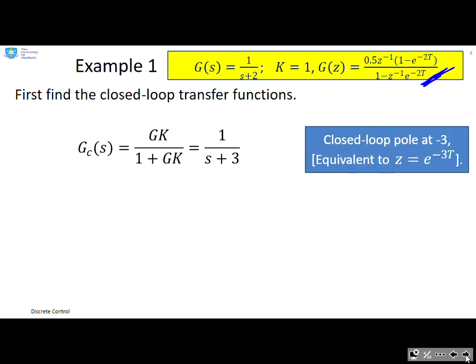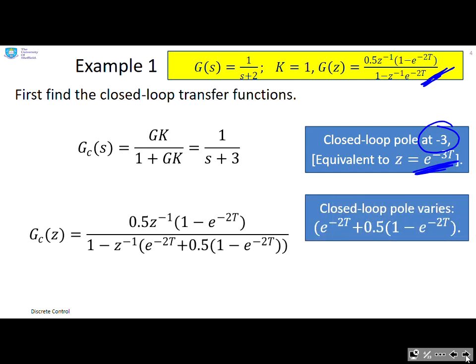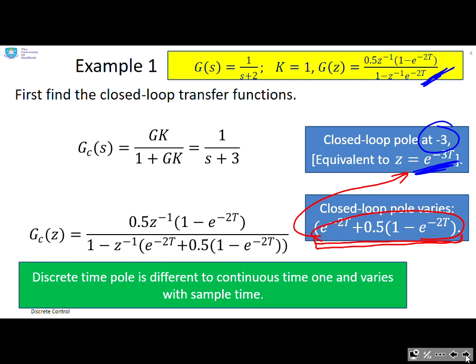If I find the closed-loop transfer functions in continuous time, it's 1 over s+3, so the key thing is that the pole is -3, or if you find the discrete equivalent it's e^(-3T). What about the discrete closed-loop transfer function? Now here you notice something interesting: the closed-loop pole is not fixed—it depends upon the sample time and more in particular it doesn't map cleanly with what you get from continuous time. So the discrete time pole is different to the continuous time one and varies with sample time.